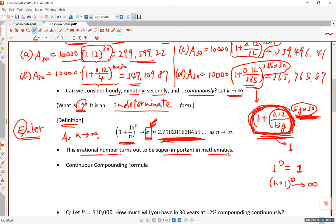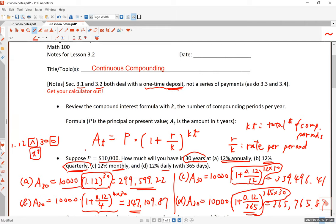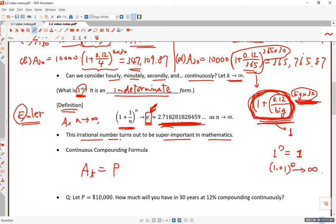This irrational number turns out to be super important in all of mathematics and natural sciences. Here's the continuous compounding formula: the amount after t years is going to be P - remember for the other compounding like monthly, quarterly, and daily, this is our formula - it's going to be much simpler if you have continuous compounding. The amount is P, the principal, times this number e raised to r times t, where r is the APR and t is time in years.